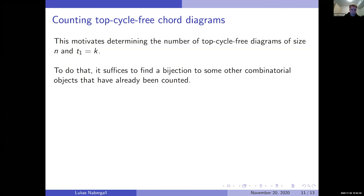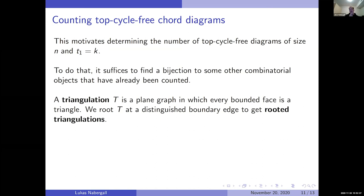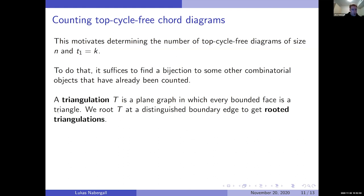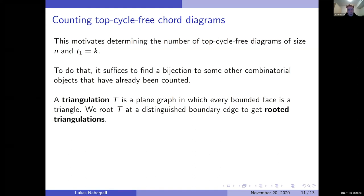Those other objects are going to be triangulations. Triangulations here are plane graphs in which every bounded face is a triangle — a triangle is three vertices all mutually adjacent — but the unbounded face is not necessarily a triangle, it might have more than three vertices. We're going to look specifically at rooted triangulations, rooted at a boundary edge — an edge on the unbounded exterior face.